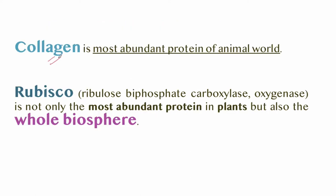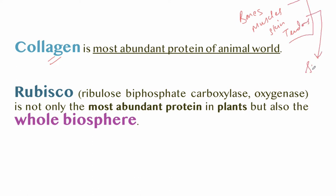Collagen is the most abundant protein of the animal world and is found in bone, muscles, skin, and tendons. Its main function is strength and structure. Rubisco (ribulose bisphosphate carboxylase) is not only the most abundant protein in plants but also in the whole biosphere — it is the most abundant protein of the biosphere.